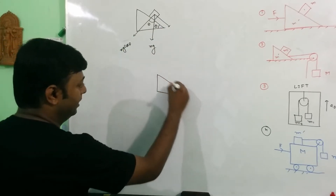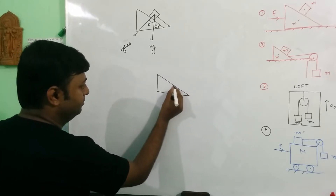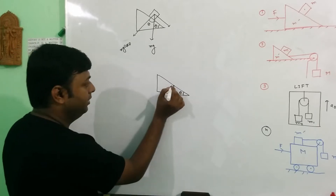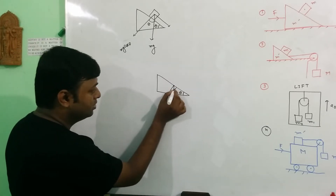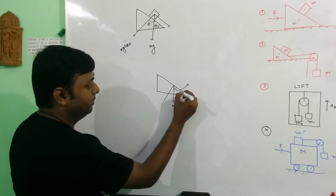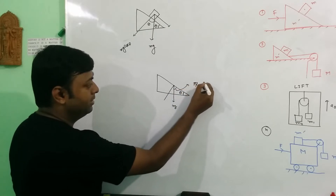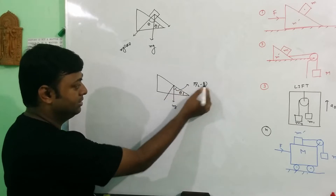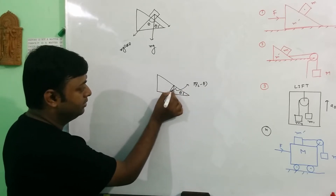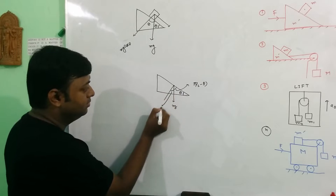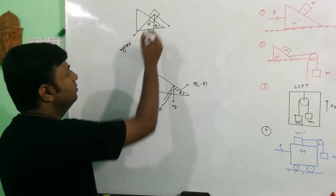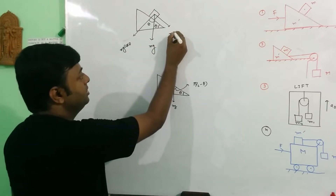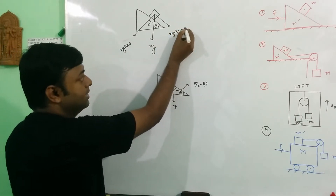When we apply this, this is mg and this is theta. This angle part is pi/2 minus theta. Since the angles are pi/2 minus theta, this angle works out to be theta. So this angle is theta, which gives us the mg sin theta component.